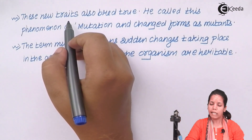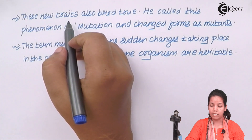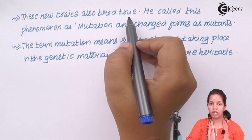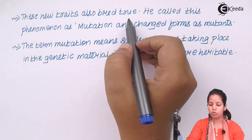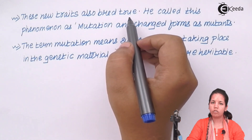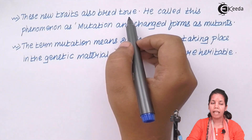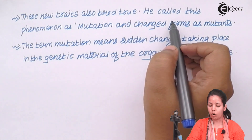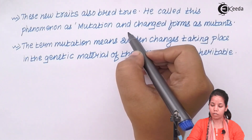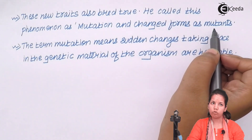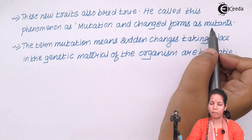What the mutation theory clearly says is that new traits formed eventually are also called as bred traits. They are the traits that are eventually formed in an organism and will show their signs. He also called this phenomenon as mutation and changed the forms as mutants, or you can say replicas.